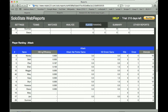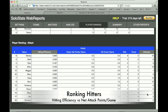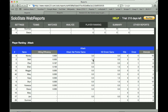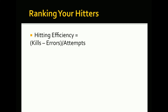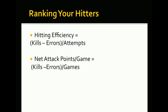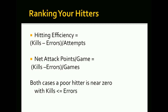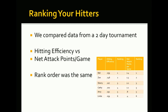For attacks, to get hitting efficiencies you really need to track the number of attempts that are being made. However, this can be really hard to do in a match since it goes so fast. We provide a different statistic called net attack points per game. The first stat is hitting efficiency, calculated as kills minus errors over attempts. The number we're using is net attack points per game, which is kills minus errors per game — so the numerator is the same in both cases. A poor hitter is near zero in either case since kills are equal to or less than errors. We compared data over a two-day tournament and looked at hitting efficiency versus net attack points per game.